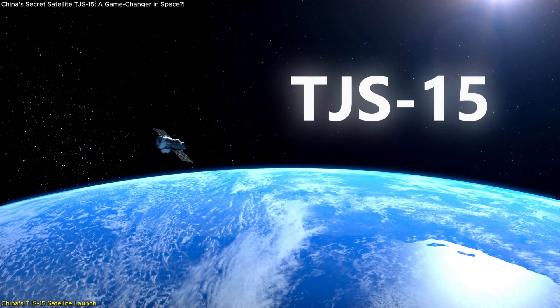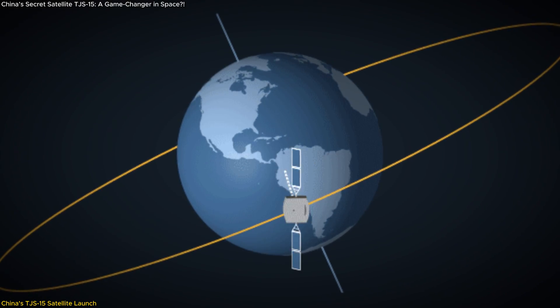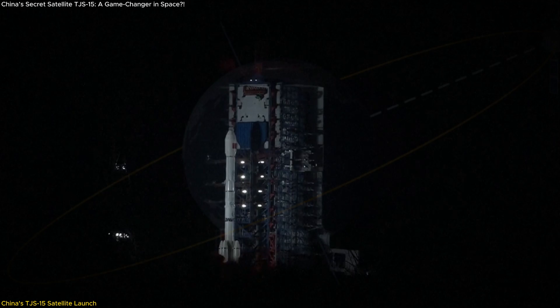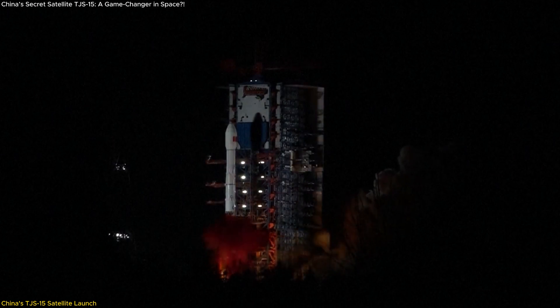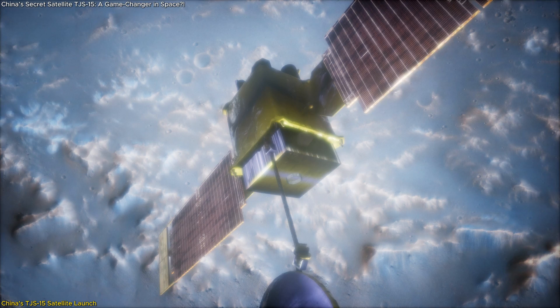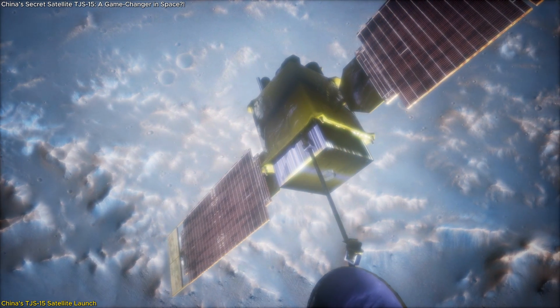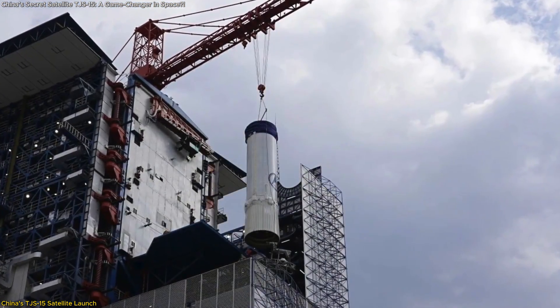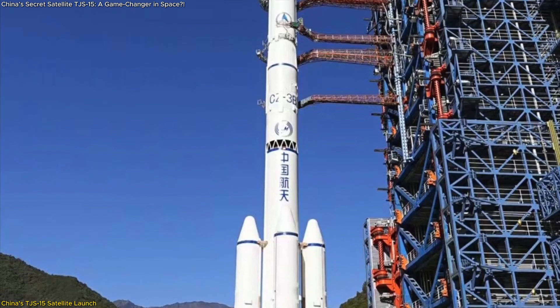China launched the TJS-15 satellite into geosynchronous transfer orbit from the Xichang Satellite Launch Center using a Long March 3B rocket. Officially described as a communication technology experiment satellite, the mission's secrecy has sparked global interest and speculation.